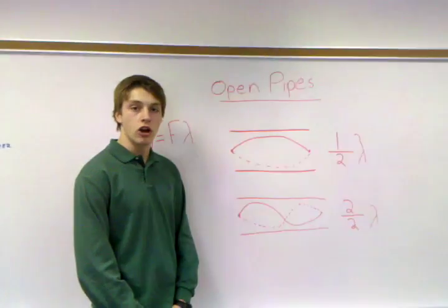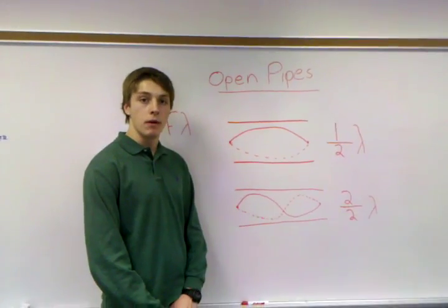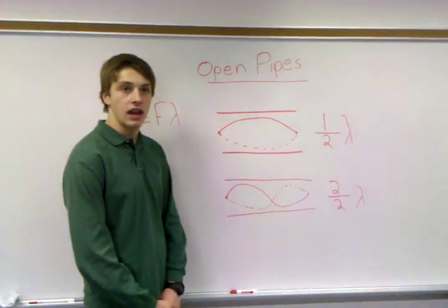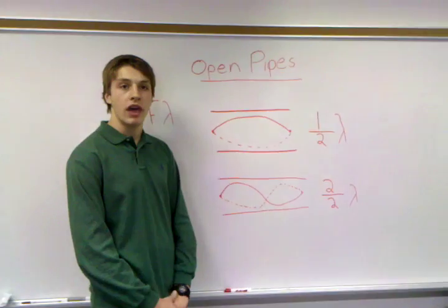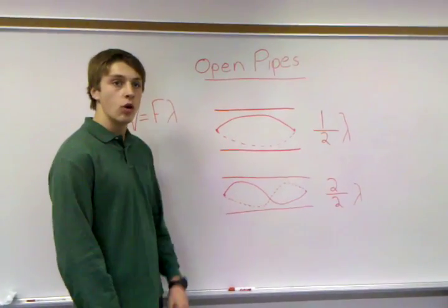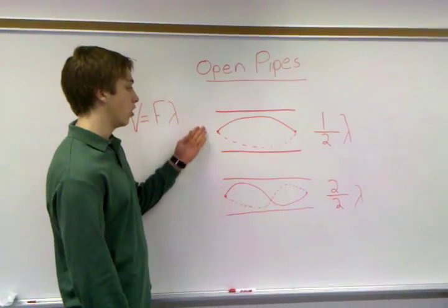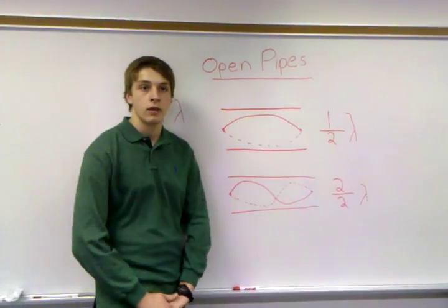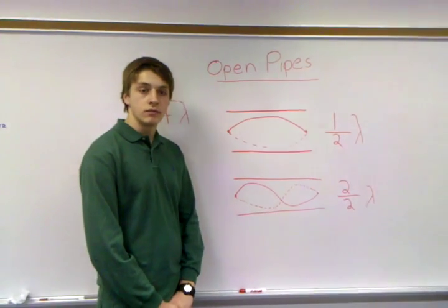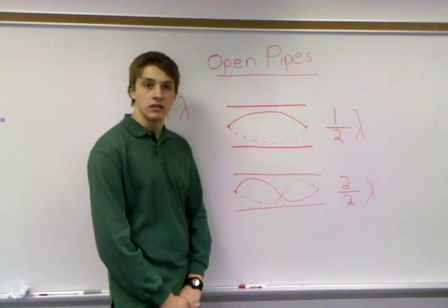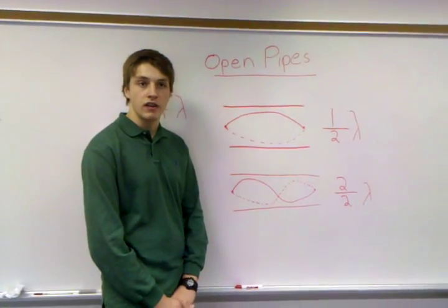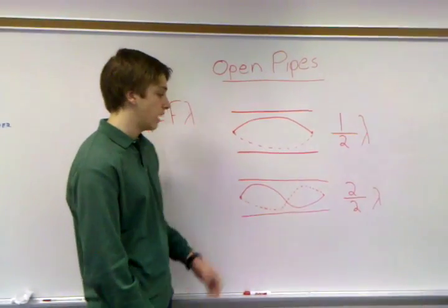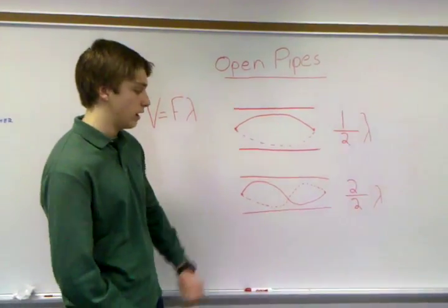Now we will talk about open pipe instruments. The shortest column of air that can have nodes at both ends is one half wavelength long — example right here. As the frequency increases, additional resonance lengths are found at half wavelength intervals, as an example right here.